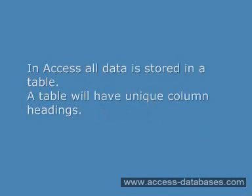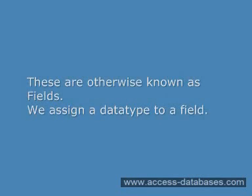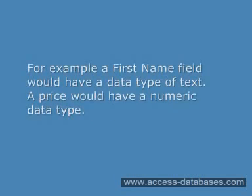In Access, all data is stored in a table. A table will have unique column headings, otherwise known as fields. We assign a data type to a field. For example, a first name field would have a data type of text, and a price would have a numeric data type.